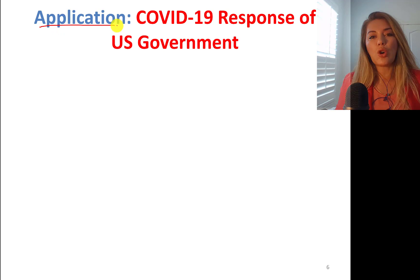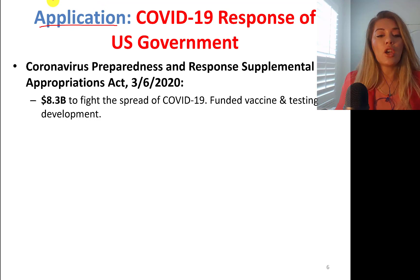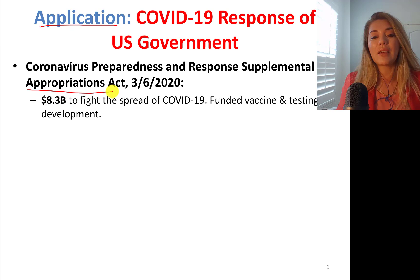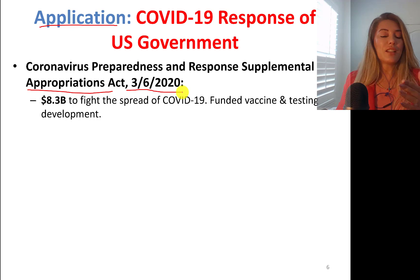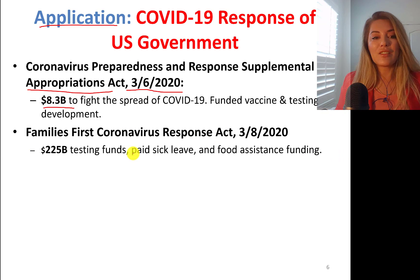Let's take a look at the COVID-19 response of the US government. COVID-19 is something we all experienced a couple of years ago. When it started, we began hearing news in January and February. The Coronavirus Preparedness and Response Supplemental Appropriations Act came into play on March 6th, 2020. After the spring break of 2020, we never came back because everything became online. The government allocated $8.3 billion to fight COVID-19, funding vaccine and testing development. Two days later, the Families First Coronavirus Response Act provided $225 billion in testing funds, paid sick leave, and food assistance funding.